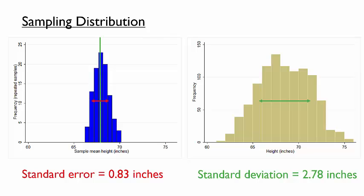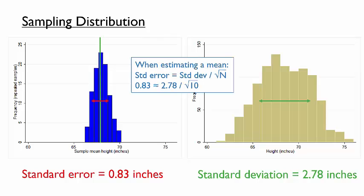Why is the sampling distribution narrower? Each sample is likely to contain some individuals who are above average height and others who are below average height. When we average over multiple individuals, we are likely to get a value closer to the population mean. In most analyses, we have only one sample, so econometricians and statisticians find ways to estimate the standard error using only one sample of data. An estimate of the standard error of a sample mean is the standard deviation of that variable divided by the square root of the sample size.